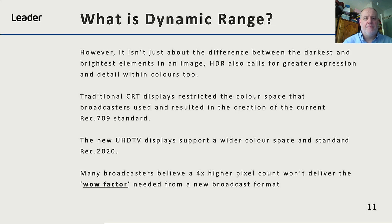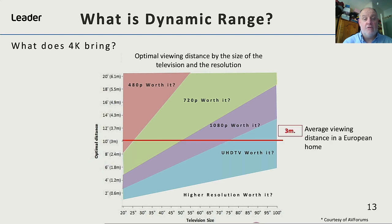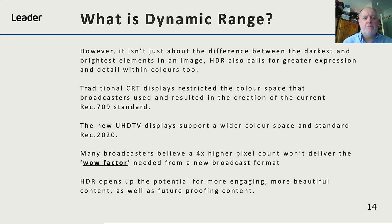Many broadcasters believe a four times higher pixel count won't deliver the wow factor needed for new broadcast formats. On this graphic, we're showing the optimum viewing distance by the size of the television and its resolution. In Europe, the average viewing distance is around three metres, which means for an HD production we really need to be watching on a 50 to 55 inch display — and, surprise surprise, when you visit your electronic showrooms and high street retailers, the majority of displays fall into that 50 to 55 inch size. For UHD, we're looking at 75 to 80 inch, which is bigger than most European homes can accommodate. So HDR opens up the potential for more engaging, more beautiful content, as well as future-proofing content.